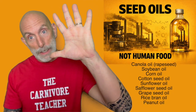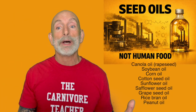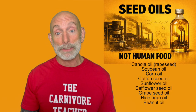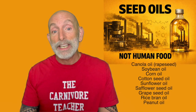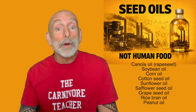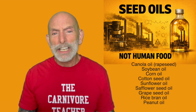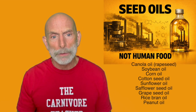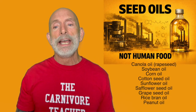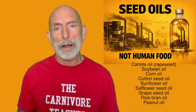Section 5 — takeaway: Seed oils are not natural food. They are industrial products extracted with heat, solvents, acids, and chemical refineries. Humans evolved eating ruminant fat: tallow, butter, eggs, suet, bone marrow, seafood fats, animal organs — not chemically extracted crop residue. Seed oils are the biggest dietary mistake in human history, and removing them is one of the most powerful steps you can take toward better health.